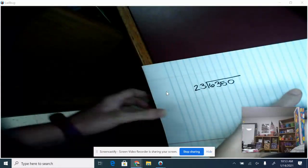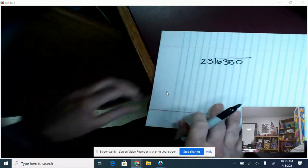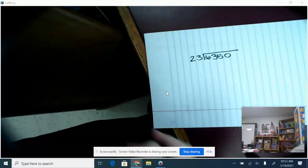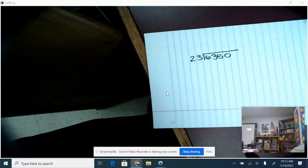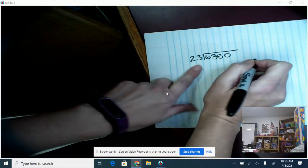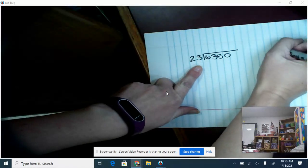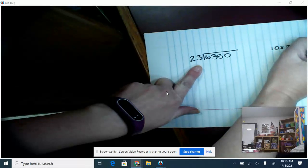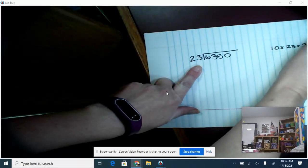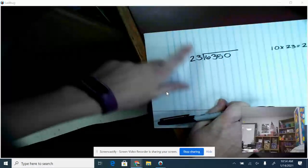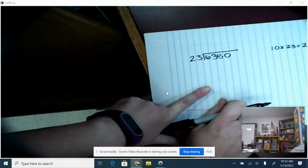Alright, so we're going to work another division problem today for practice, and this one's a little bit bigger than the ones that we have been doing. Normally I say to start out with 10, but if I did 10 times 23, that gives me only 230. So this would take us a long time if we just started out with 10 on this one.